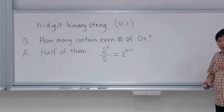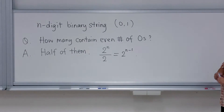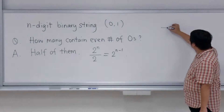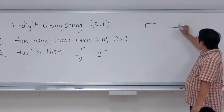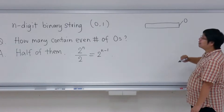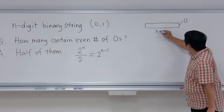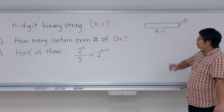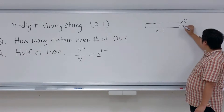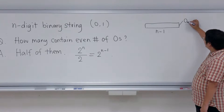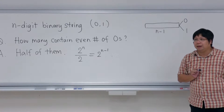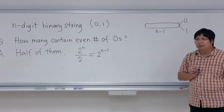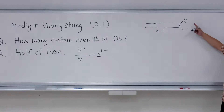One way of thinking about this problem: say you have an n-digit binary string. We forget the first part and focus on the last part. For the same first n minus one digits, you can attach a zero at the end or you can add a one at the end to make two strings.